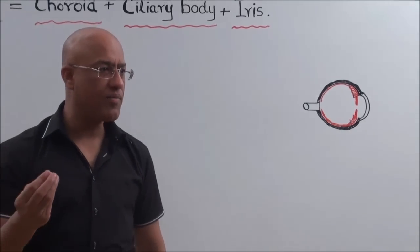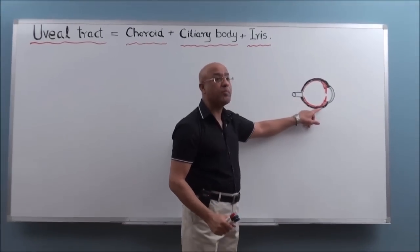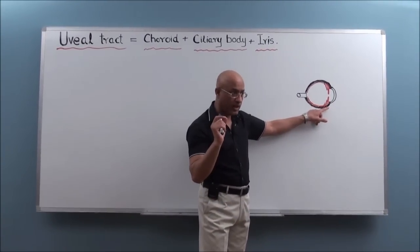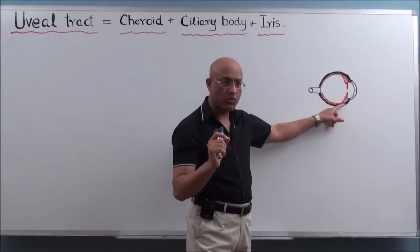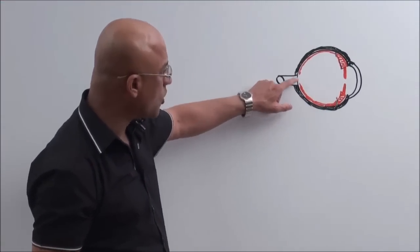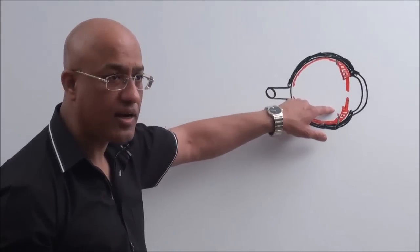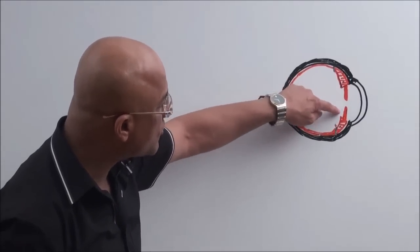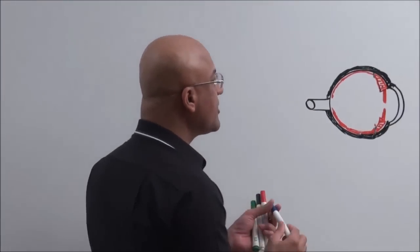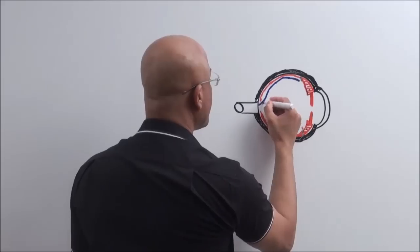What is the uveal tract? The uveal tract is basically the middle coat of the eyeball wall. It is a vascular and pigmented coat — heavily vascular. The posterior five-sixths of the eyeball is basically the choroid, then a large part is called the ciliary body, and this diaphragm-like structure with a central aperture is called the iris.